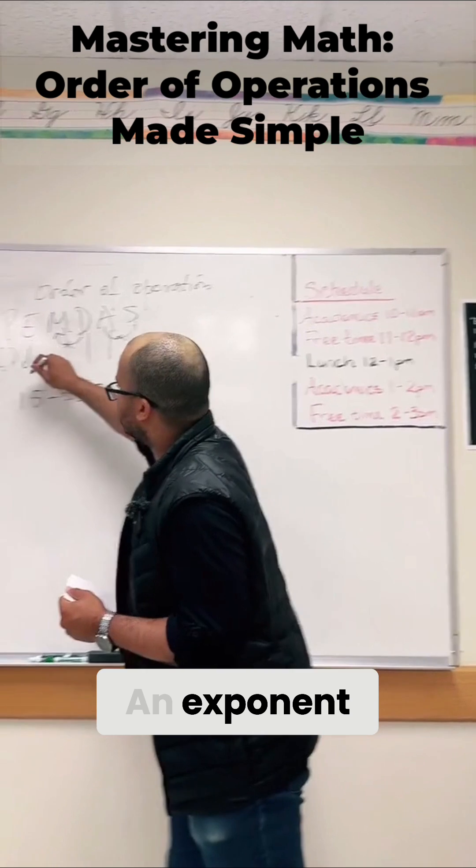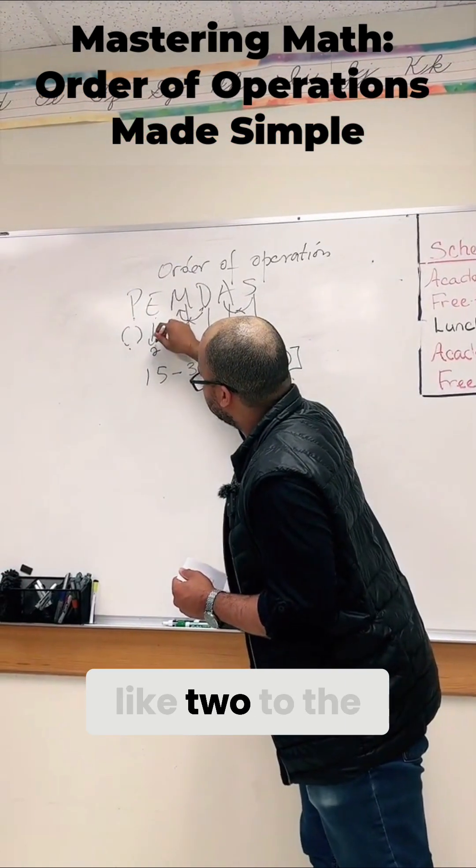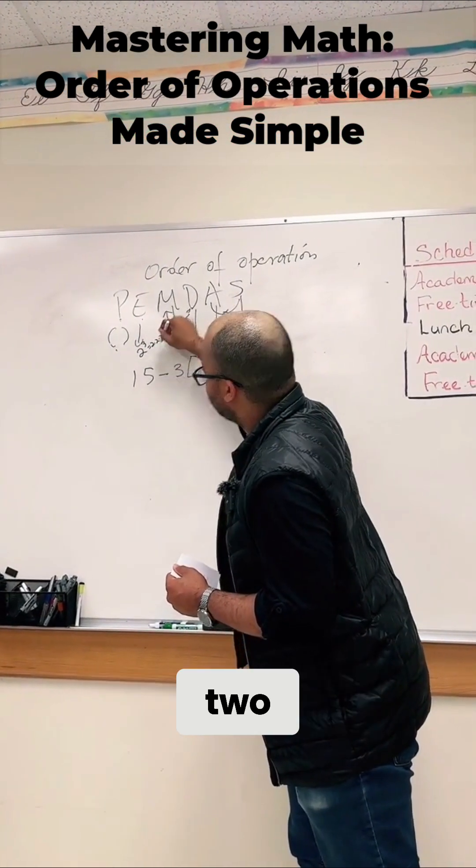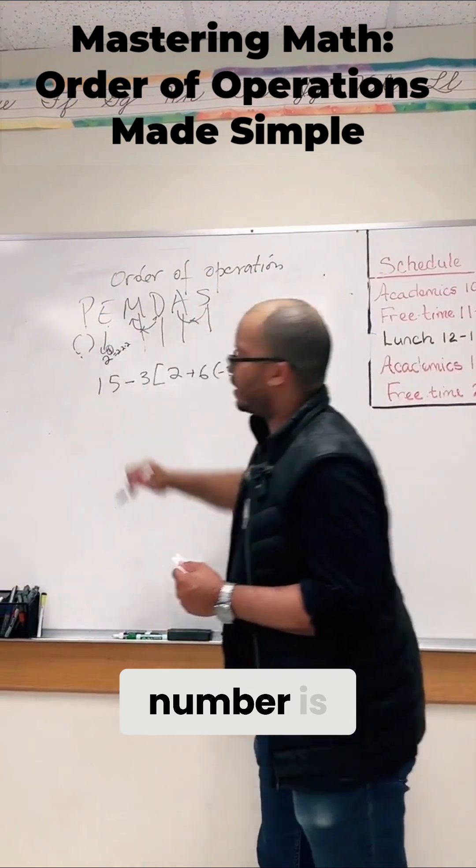An exponent, an example would be like 2 to the 3rd, which just means you do 2 times 2 times 2. That little number is the exponent.